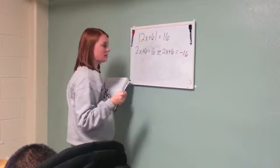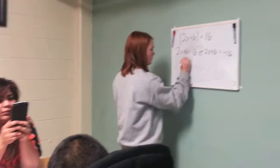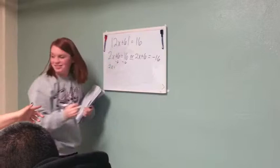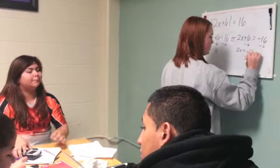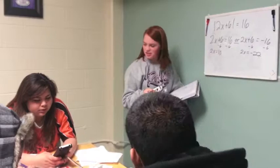So, the next step would be to subtract 6 from both sides. That's 10, right? That's 10? That's 10? Yeah. That's 10. Good job. So, 2x equals 10, or 2x equals negative 22. And then... Do you understand that? Oh, yeah. Oh, I got it. Got it? Okay.